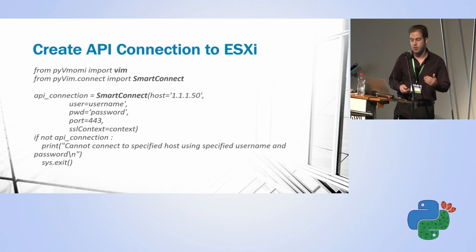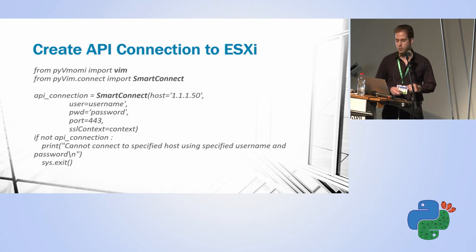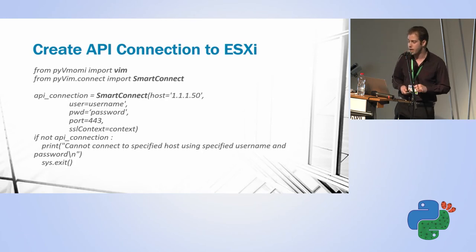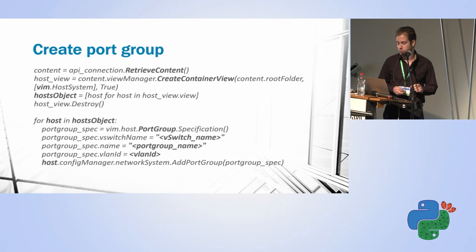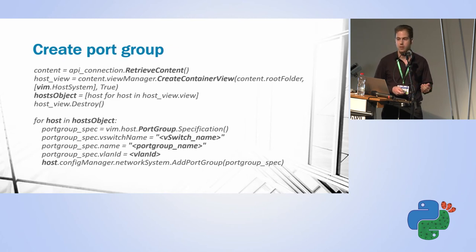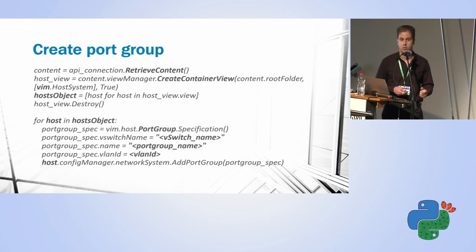Now I need to create communication from the VM to the outside world. As mentioned, I need to create a port group. Here I'm using PyVMOMI — the SDK for interacting with the VMware REST API — to send the port group creation. I create the connection, then create the port group. In this example I'm going over all the hosts in my server farm and creating the port group, but you can also just create it on the specific ESXi host.